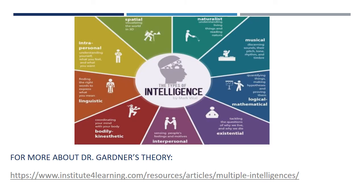Listed here, along with the nine different kinds of intelligence as per the theory of multiple intelligences, are the skills and strengths of each kind of person with this intelligence. Take a moment to look around the circle, find your strengths and or challenges, and look at the tasks that are involved with these forms of intelligence. What do people with these intelligences excel at? For more about Dr. Gardner's theory, click the link below.